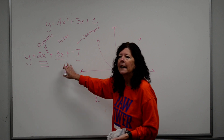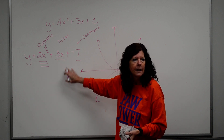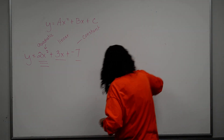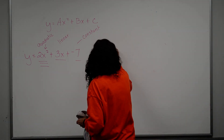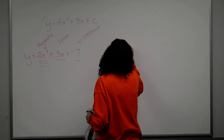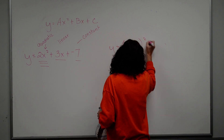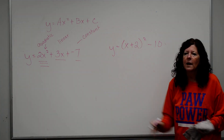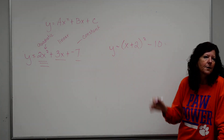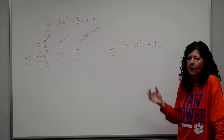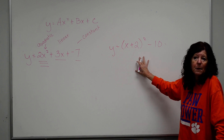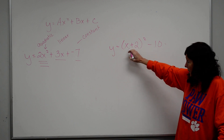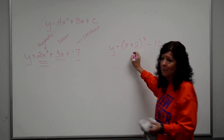Every once in a while they'll give you something like y equals x plus 2 squared minus 10, and ask what's the quadratic term, what's the linear term, what's the constant term. Well, this would have to be worked out. This right here, I have to do FOIL on it. You don't square the x and square the 2 separately — you know better now.